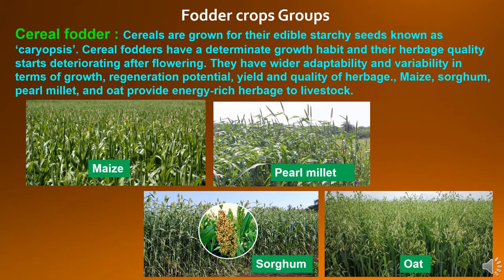Fodder crops are divided into different groups like cereal fodder, legume fodder, grass fodder, fodder trees and shrubs, and other crops. Now we will discuss about each one.